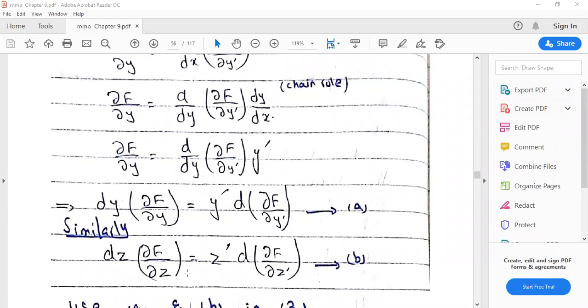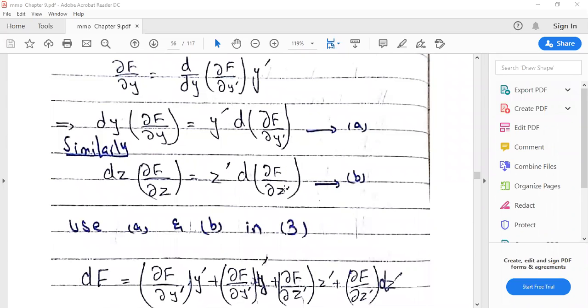dz is equal to partial f over partial z is equal to z prime into d partial f over partial z prime.